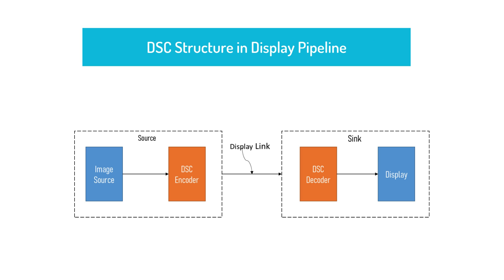DSC Structure in Display Pipeline. A typical DSC structure in the display pipeline consists of an encoder on the source side and a decoder on the sink side. The encoder divides the image into slices and applies the compression algorithm on each slice. The decoder decompresses each slice and reconstructs the image.